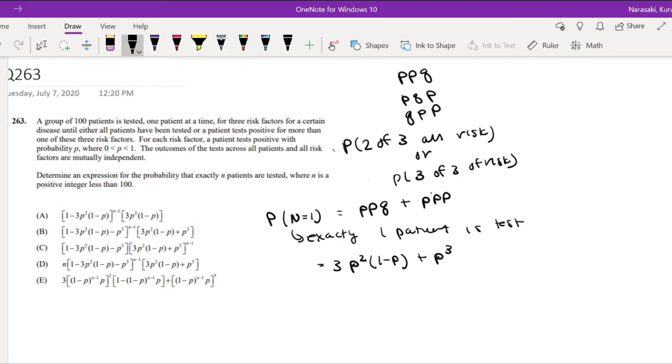And then we're looking for, so this was when n was equal to 1. Okay, so let's try it for when n is equal to 2. When n is equal to 2, what's the probability that the first patient did not have any of this? Well, that's just equal to 1 minus this whole stuff. What's the probability that they did not have any of it, and the second patient had exactly 2 of the 3 risks or exactly 3 of the 3 risks.